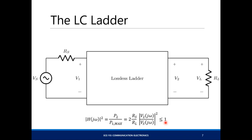Your lossless ladder has this equation: the transfer function squared is P2 over P1 max, assuming maximum power transfer from RS to load RL. The magnitude squared of your filter response equals P2/P1 max, and this is less than or equal to 1 since it's passive. If it were greater than 1, you'd be adding gain, but since the circuit contains only passive elements, the maximum value is 1.